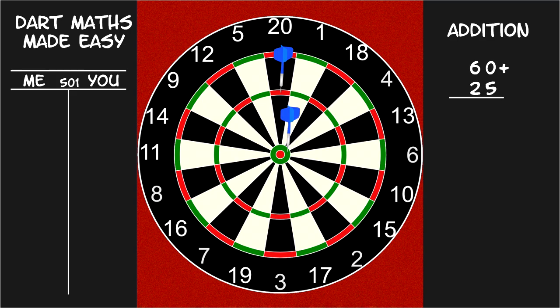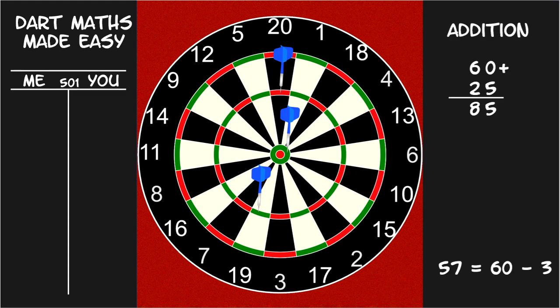60. 25. An easy addition. 6 plus 2 is 8 and end with the 5. 57. Round up to 60 and add to get 145. Then subtract 3 to get 142.